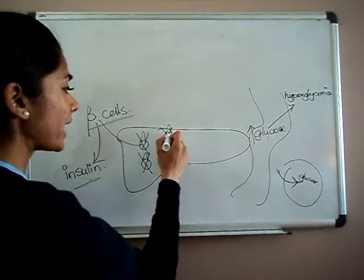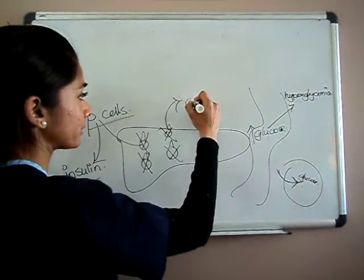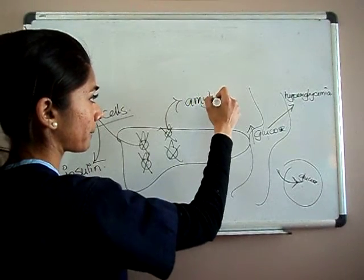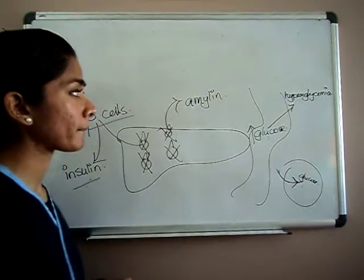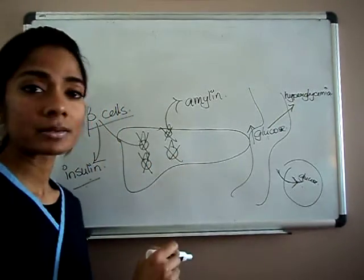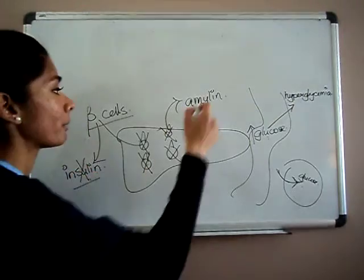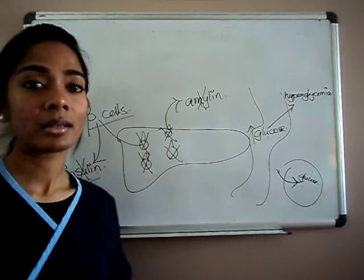Now your beta cells produce another hormone called amylin. So if you have diabetes type 1 and you don't have beta cells, not only can you not produce insulin, but you can't produce amylin either.